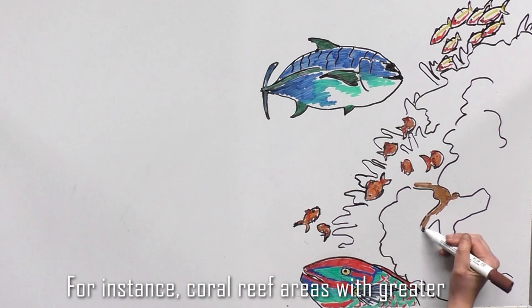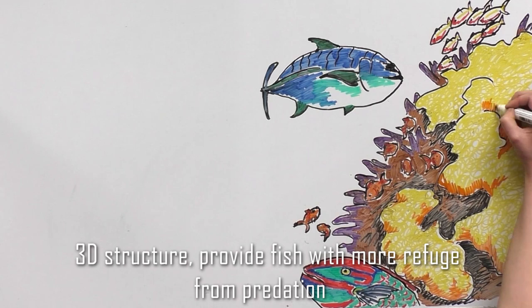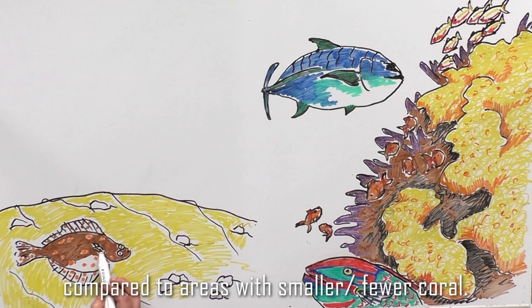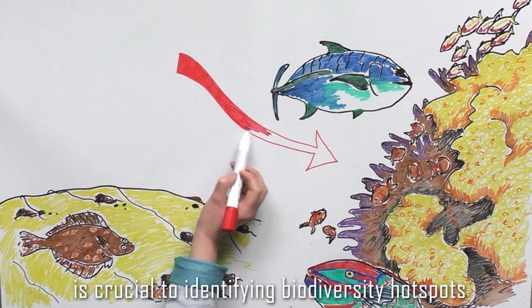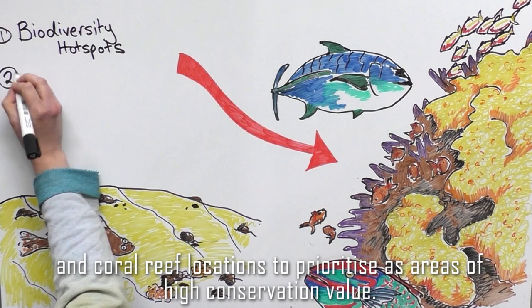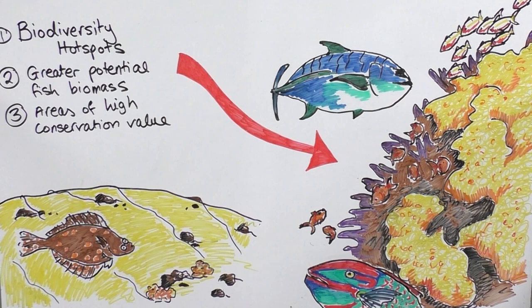For instance, coral reef areas with greater three-dimensional structure provide fish with more refuge from predation compared to areas with smaller or fewer amounts of corals. So being able to find these important safe havens for fish is crucial to identifying biodiversity hotspots, areas of greater potential fish biomass and coral reef locations to prioritize as areas of high conservation value.